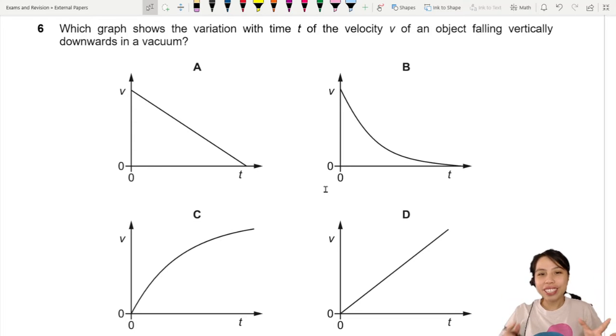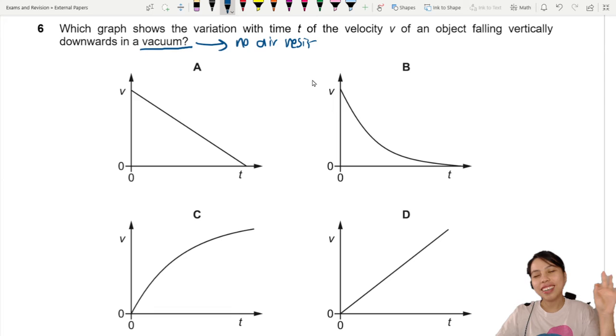Which graph shows the variation with time of the velocity of an object falling vertically downwards in a vacuum? Vacuum is an important word here because a vacuum tells me that there will be no air resistance. Beautiful. No drag force.